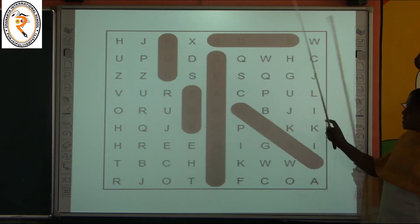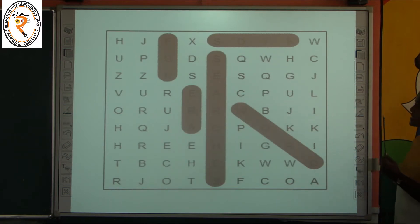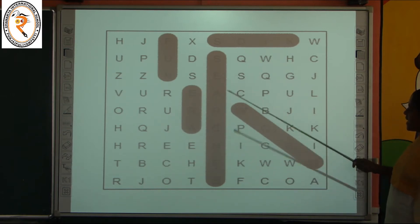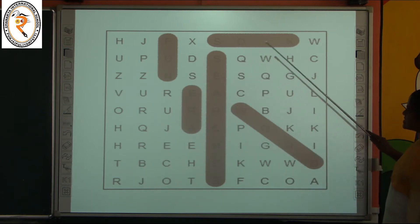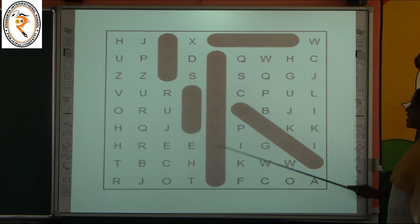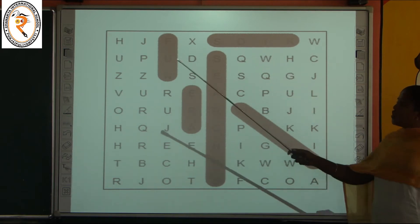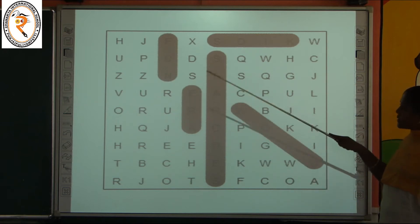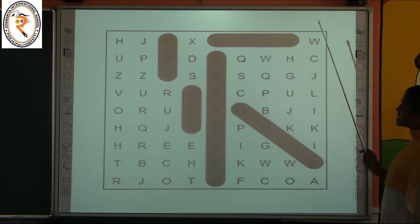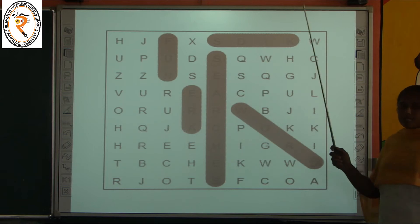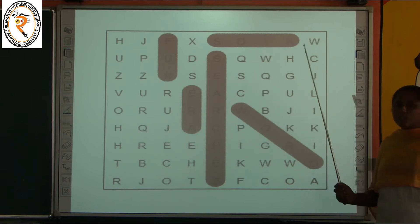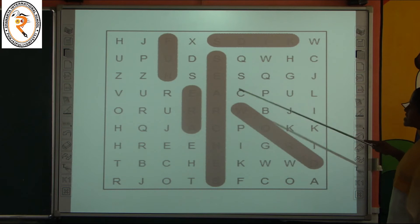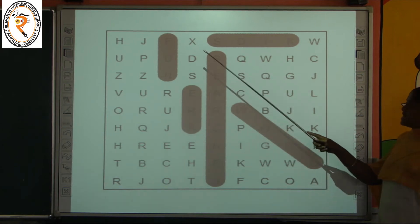What is the word grid? There will be a number of letters given in a box and we have to find the word they have given in that word grid. For finding that word we have to use these steps: top to bottom, bottom to top, left to right, right to left. This is the word search.